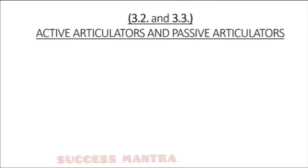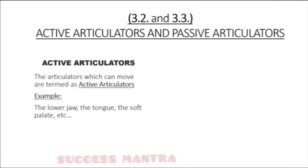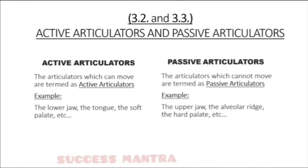Active articulators are organs which can move — for example, the lower jaw, the tongue, and the soft palate. Passive articulators are organs which cannot move during the production of speech sounds — examples include the upper jaw, the alveolar ridge, and the hard palate.